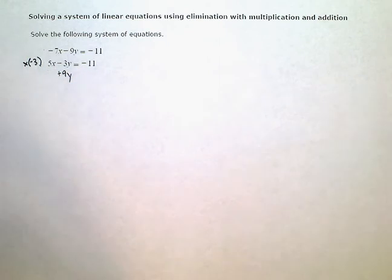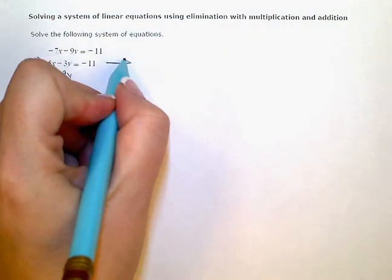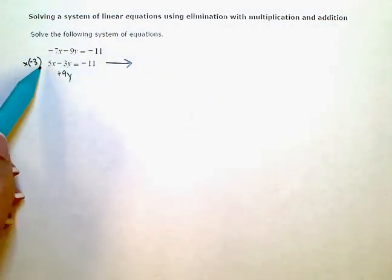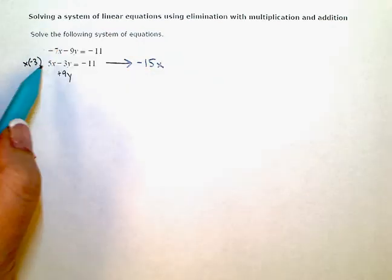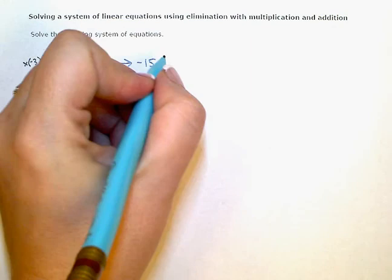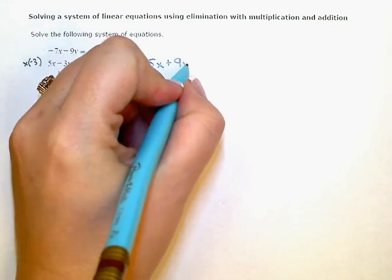So this bottom equation is going to become negative 3 times 5x is negative 15x. Negative 3 times negative 3y is going to give me the positive 9y I was after.